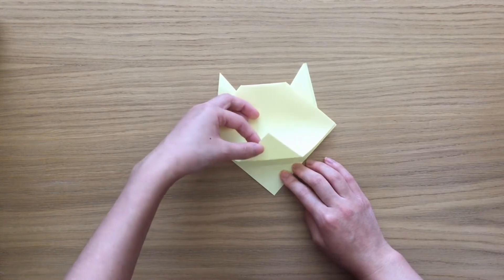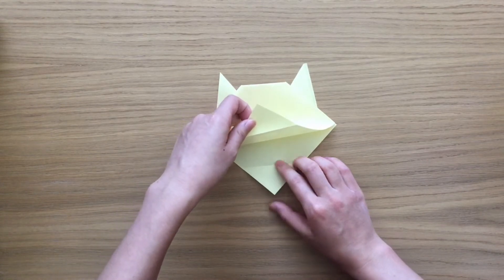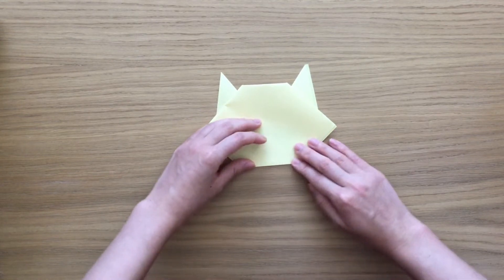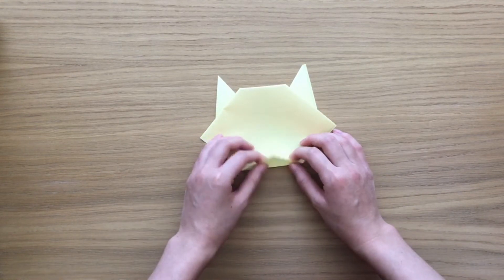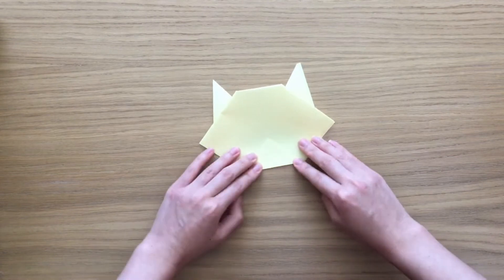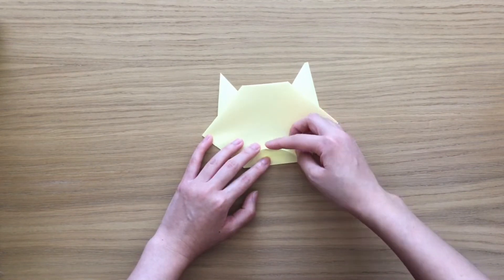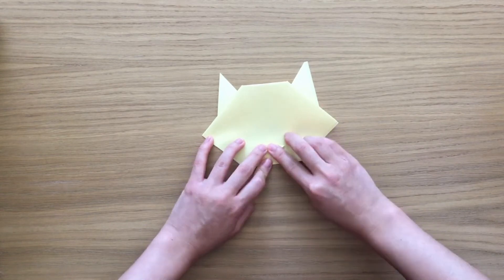Now we're gonna lift the front flap upwards and then tuck the other flap inside, so you should have one flap sticking out. Just one. Fold down this top bit to make a little nose.